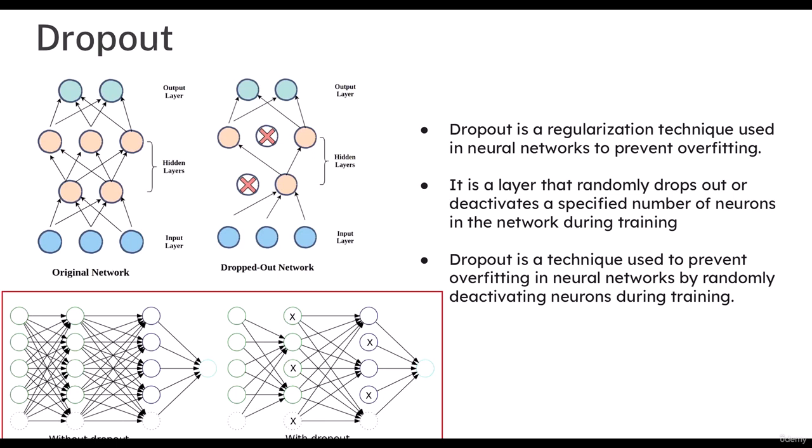Suppose that you have your original neural network something like that. If you add a dropout in your neural network during the training iteration, it randomly drops some of these nodes during the training.